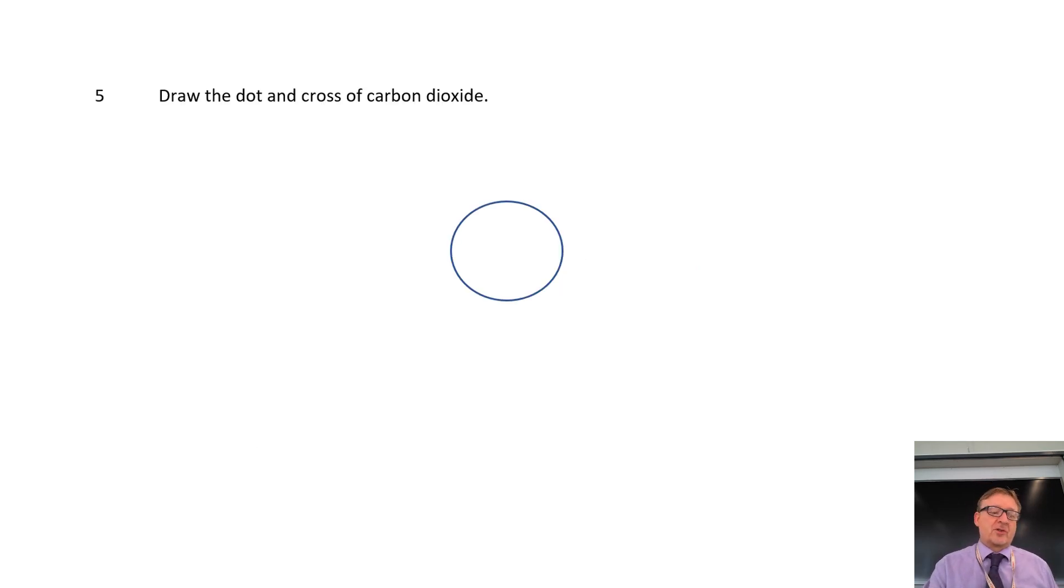Draw the dot and cross of carbon dioxide. So what we're now doing is we're now talking about covalent. Because carbon is a non-metal, oxygen is also a non-metal. Now, I'm going to kind of cheat here, I'm not going to do the working out, but what I'm going to do is I know that carbon's got four electrons in its outer shell. So I'm going to go 1, 2, 3, 4, and that's carbon.